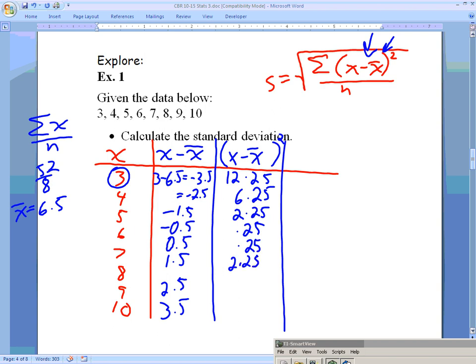After we have squared our data minus our mean, it says to sum our data. So I'm going to take this column and add them all up: 12.25 plus 6.25 plus 2.25 plus 0.25. Then we notice all those values repeat, so I'll just add those together again or multiply by 2, and we end up with a total of 42.